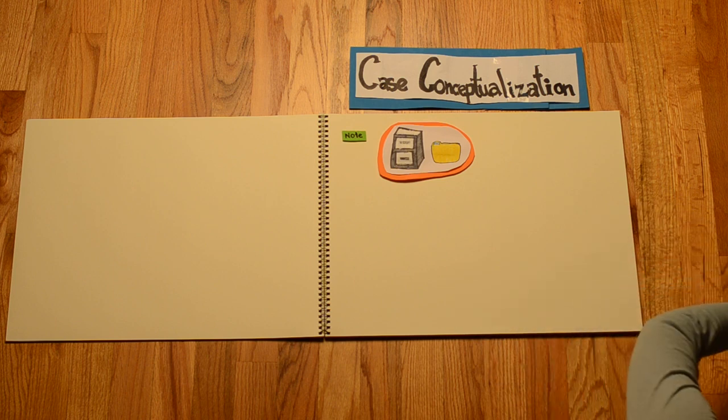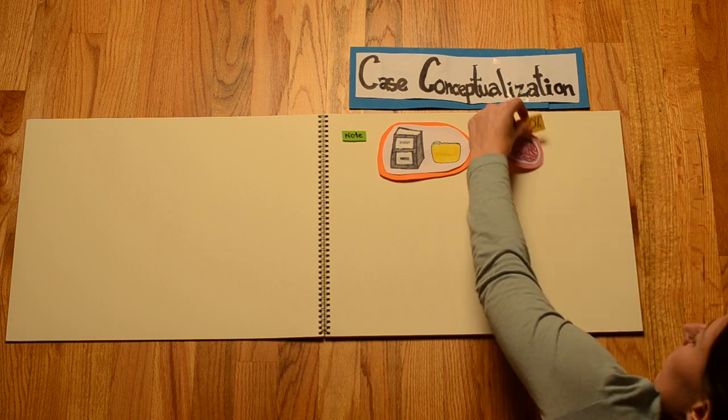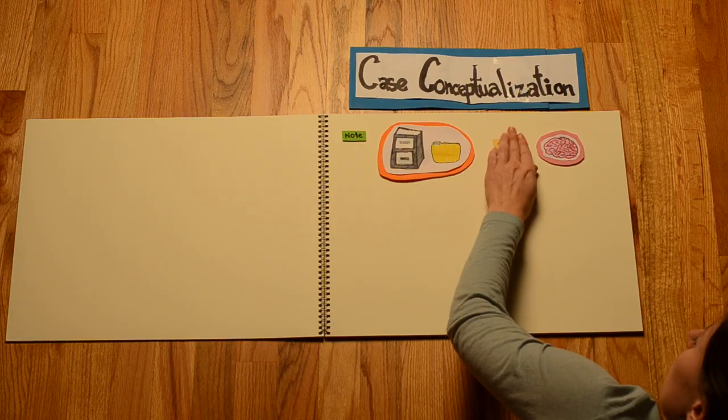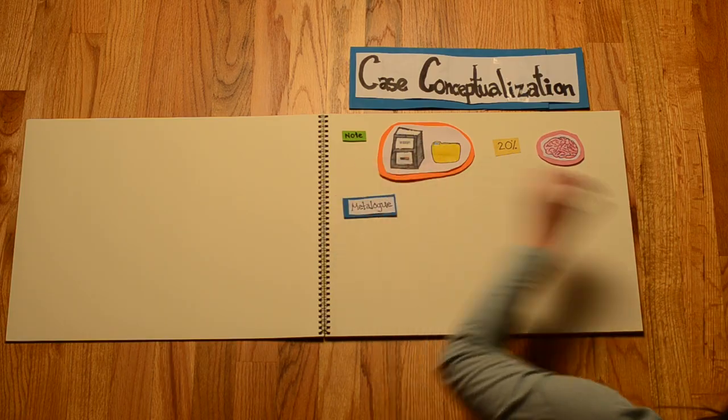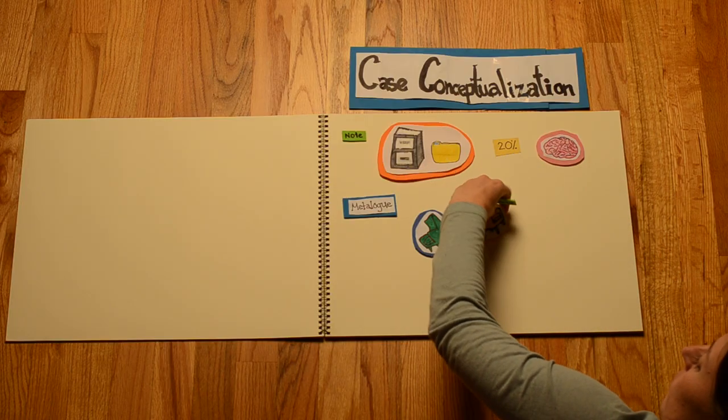Now, it is important to note that we don't always file away this metalogue, this information that we get from the other 20% of our brain. Sometimes we are going to want to use this metalogue in session.